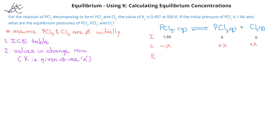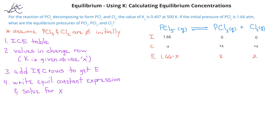We can now add the initial and the change values to get the equilibrium values in the ICE table. For PCl5, this will be 1.66 minus X. For PCl3, this will be X. And for Cl2, this will also be a value of X.